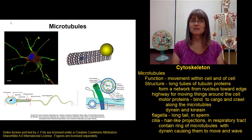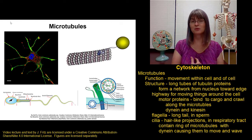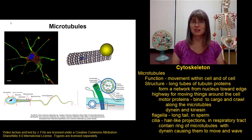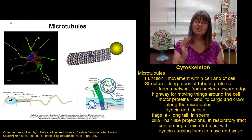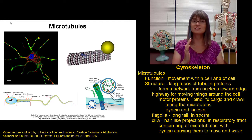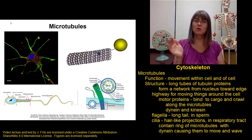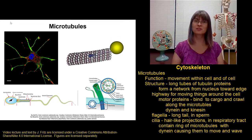We have other cells that have cilia. Cells lining the respiratory tract and lining the uterine and the female reproductive tract have cilia on them. The cilia, these hair-like structures on the surfaces of these cells, contain microtubules that wave to help move substances along the surface of those cells.